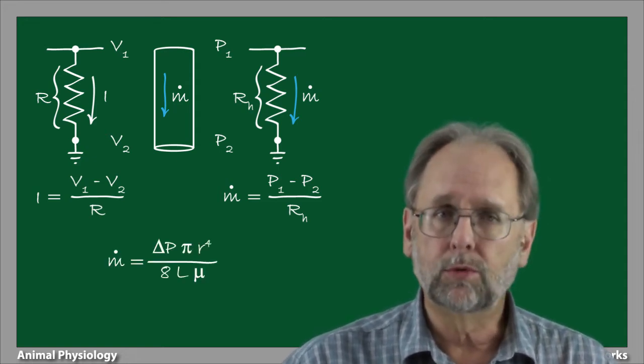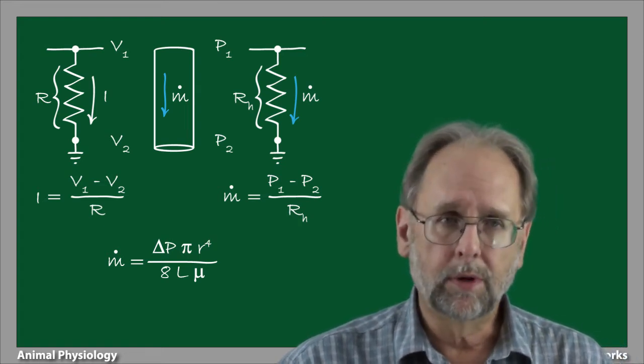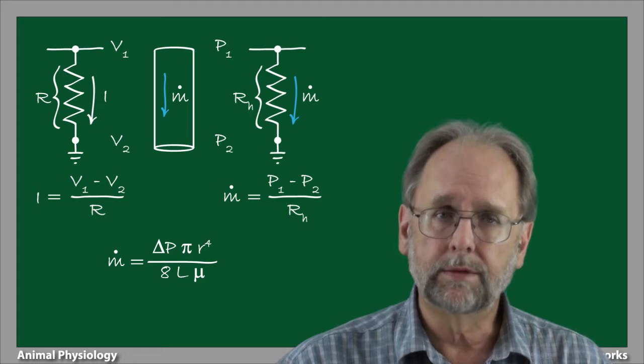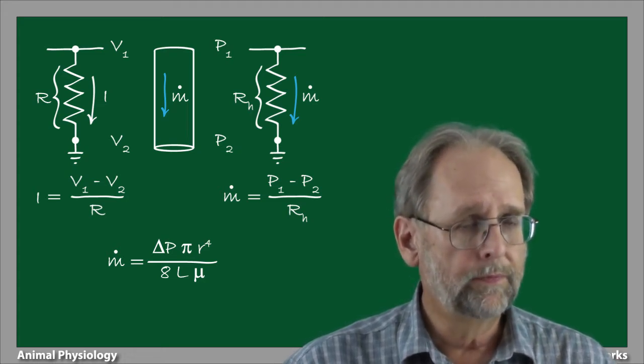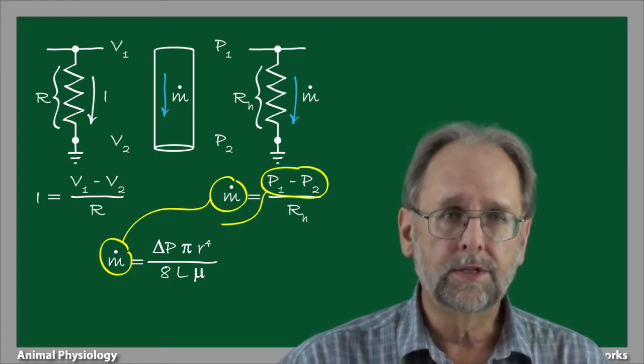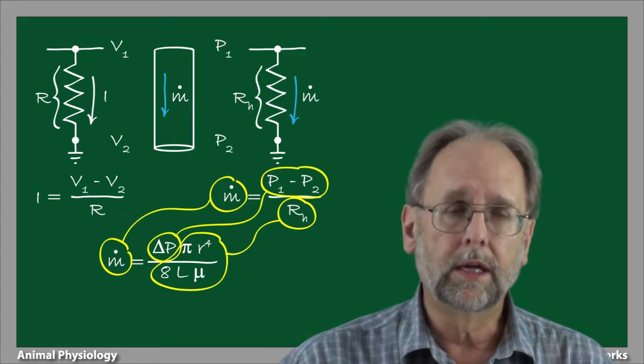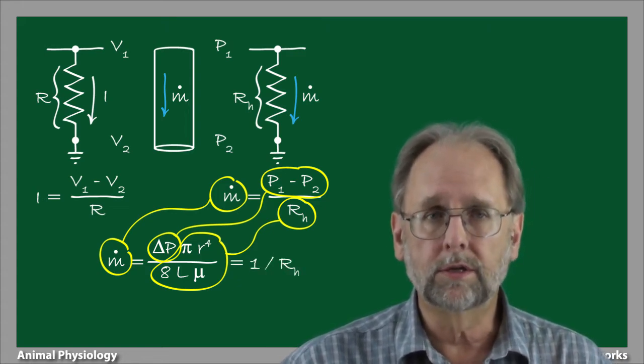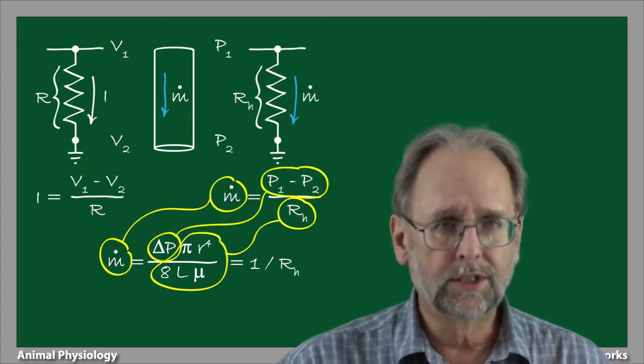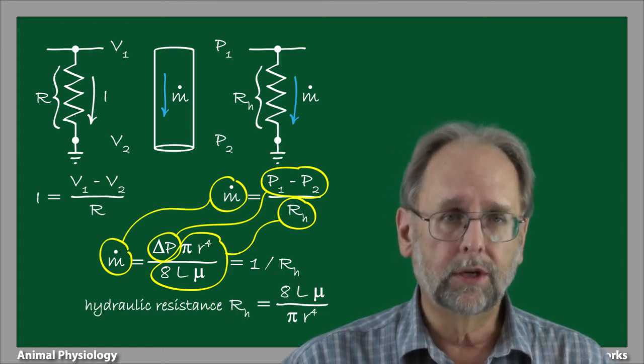Poiseuille's law lets us do just this. Pressure difference and flow are the easy parts. They're direct terms of the equation. The trick is to calculate the hydraulic resistance. We have the mass flow and the pressure difference, and this means that the remaining terms in Poiseuille's law are equivalent to the inverse of the hydraulic resistance, 1 over R sub H. Let's just state this explicitly. Hydraulic resistance is equivalent to this ratio.